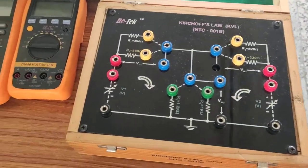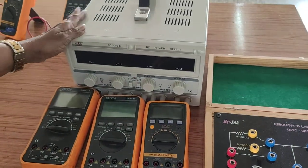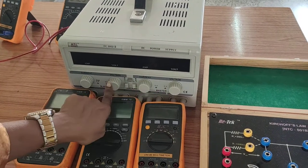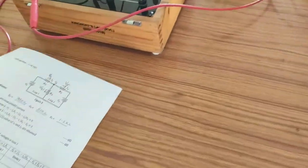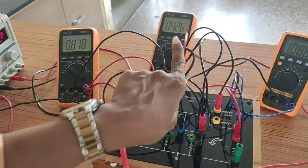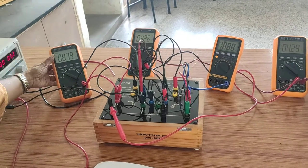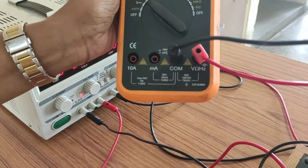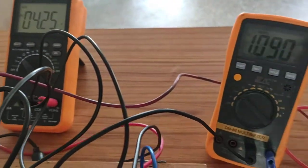We need multimeters for the measurement of voltage and this is the DC supply which comprises of two voltage sources V1 and V2. Here we have connected four voltmeters with the help of multimeters. You can see we are using multimeter in voltmeter mode, so we are using four multimeters.